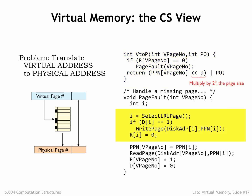The page fault routine starts by selecting a virtual page to be replaced, writing out its contents if it's dirty. The selected page is then marked as not resident. Finally, the desired virtual page is read from secondary storage and the page map information is updated to reflect that it's now resident in the newly filled physical page.